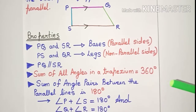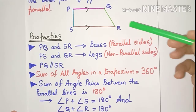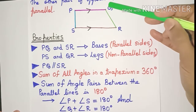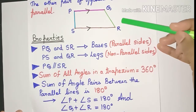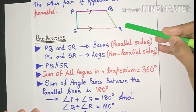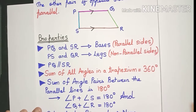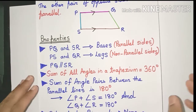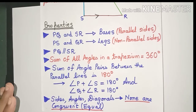Moving on to the next property, the sum of the angle pairs between the parallel lines is 180 degrees. The angle pairs between the two parallel lines are angle Q and angle R, and angle P and angle S. So angle Q plus angle R is 180 degrees and angle P plus angle S is also 180 degrees. There is no other condition on a trapezium — sides, diagonals, and angles need not be equal at all.